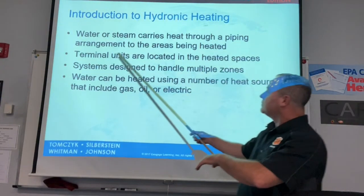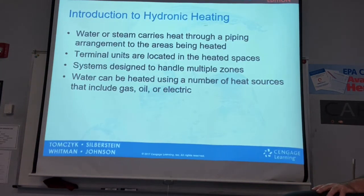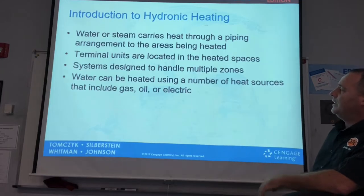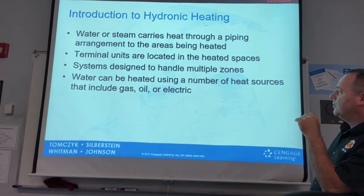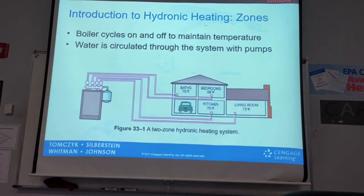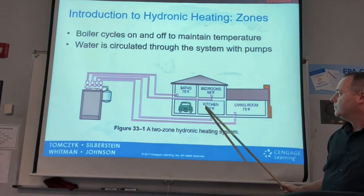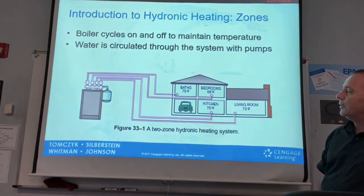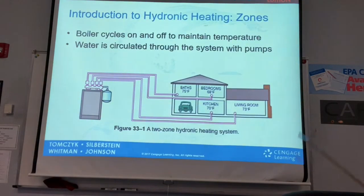Water or steam carries heat through pipes to areas to be heated. Terminal units are located in the heated spaces. The system is designed to handle multiple zones, and you can see how the different zones get different temperatures from the boiler, which cycles on and off.